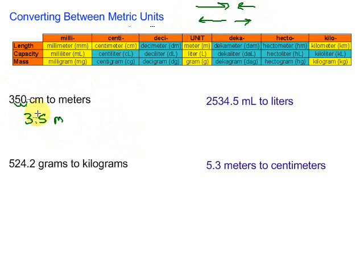And if we think about it, it makes sense. A meter is approximately a yard, and there's 100 centimeters in each meter. So 350 of those would make us 3.5 meters.